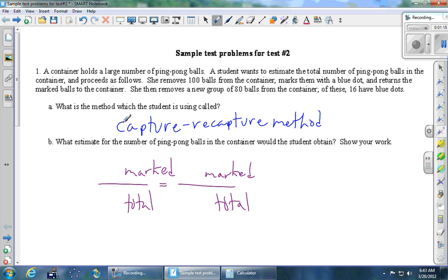So let's start filling in these pieces. On the recapture part, that's this sentence here, it says of 80 balls, 16 have blue dots. So there were 16 that were marked out of 80 total. That was on the recapture.